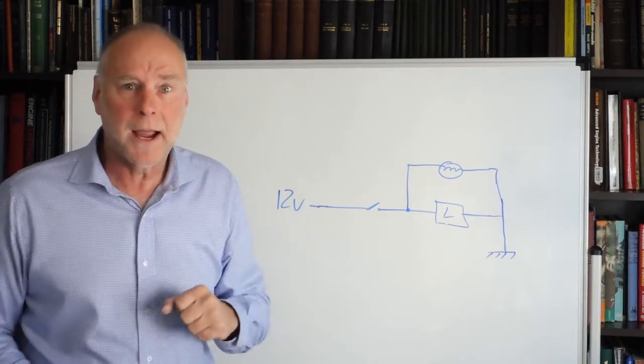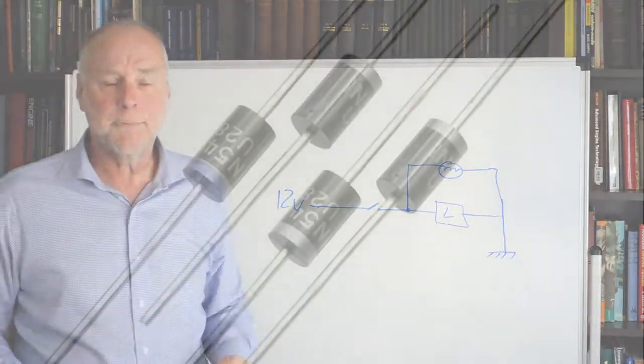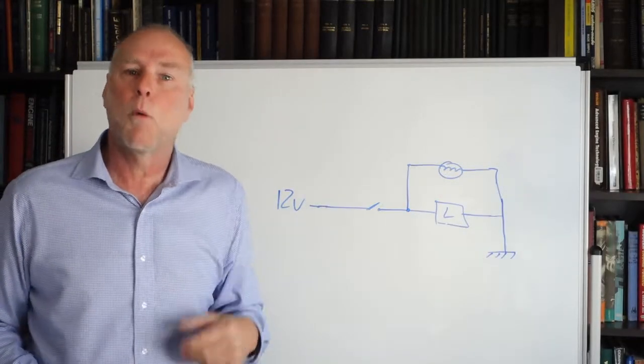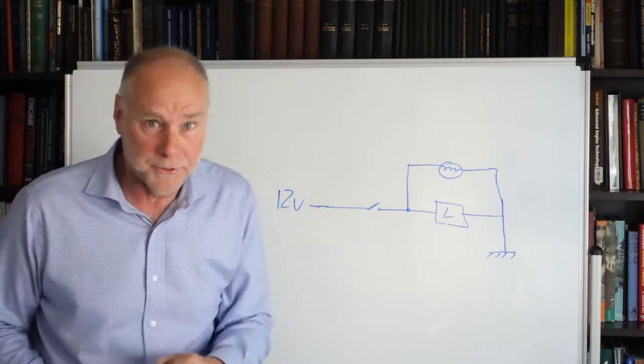Now diodes are just one-way valves, they're very cheap, they're just a tiny component and they're really useful in car electrical and electronic systems. So let's have a look at one application of diodes.